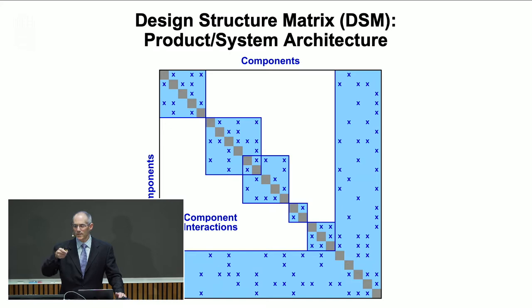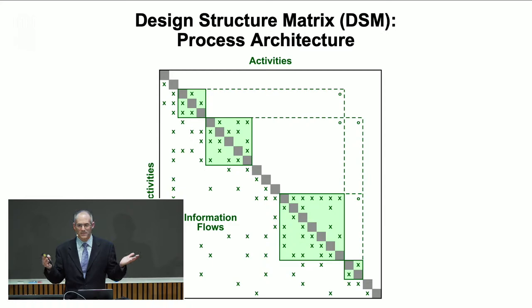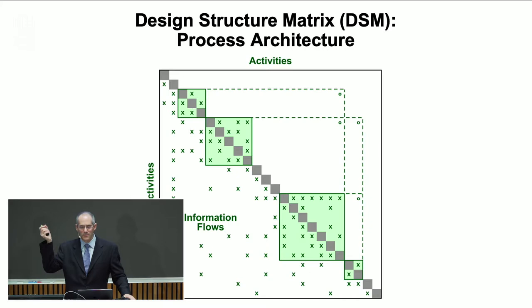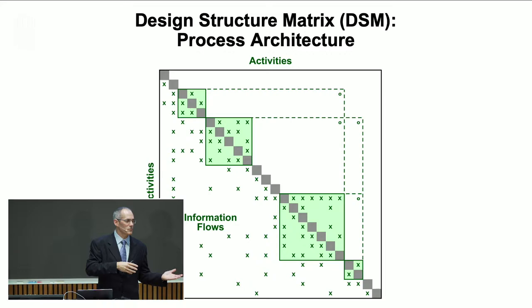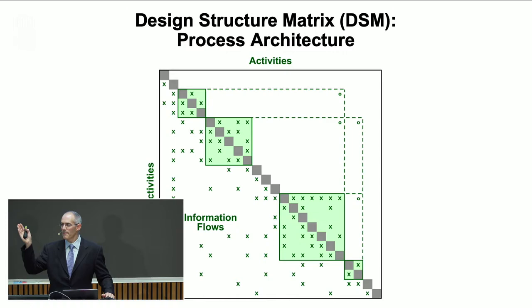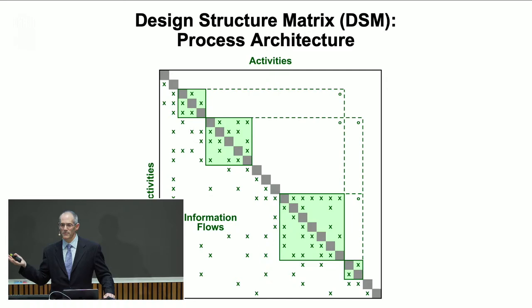That's the product domain. In the process domain, we can do the same thing — the networks look different because process models have directional flow, with activities having inputs and outputs. A process model represents the network of tasks or activities, written down on the side and along the top, ordered in a certain way to reveal the process flow. We can identify why the process takes so long, why it's so frustratingly iterative and slow, and what happens when the process fails.